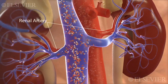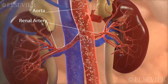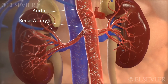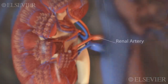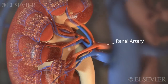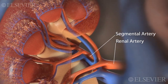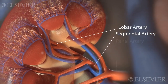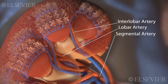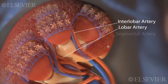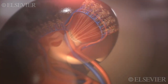The renal artery, which branches off of the aorta, brings blood into the kidney. As the renal artery nears the kidney, it divides into segmental arteries, which divide further to become the lobar arteries. The lobar arteries divide into the interlobar arteries, which branch into afferent arterioles.